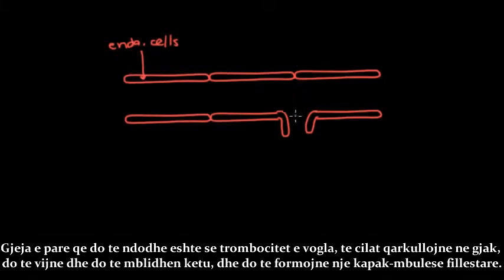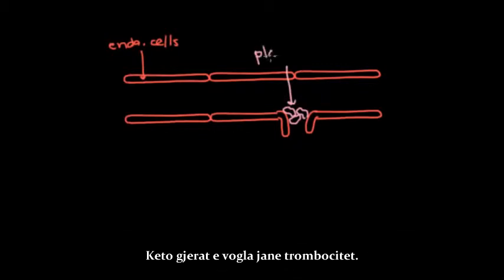The first thing that's going to happen is that little platelets which are circulating in the body are going to come and deposit there and form an initial plug. So these little things are platelets.